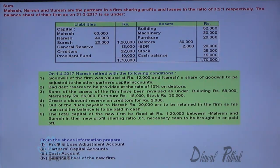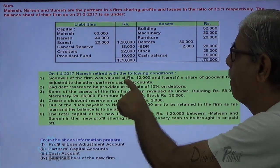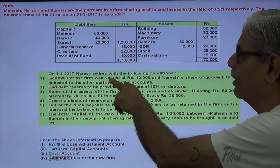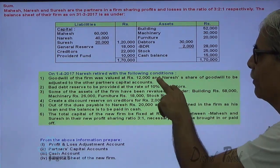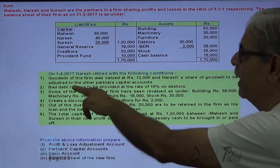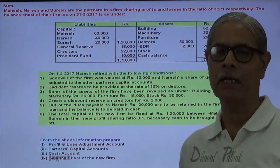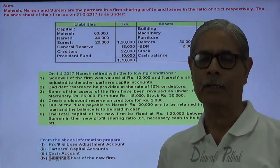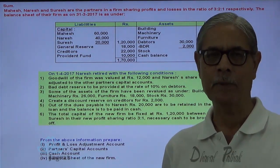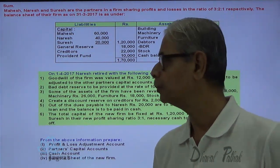On 1st April 2017, Naresh retired with the following conditions. Goodwill of the firm was valued at 12,000 and the share of Naresh in goodwill is to be adjusted to other partners' capital accounts. That adjustment is to be done on the basis of gain ratio.